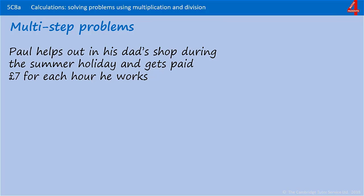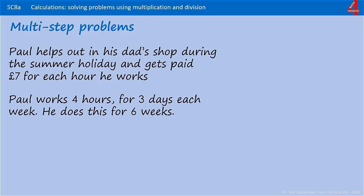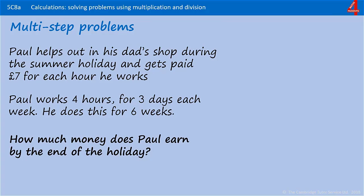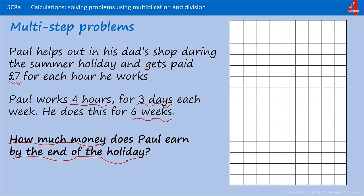Paul helps out in his dad's shop during the summer holiday and gets paid seven pounds for each hour he works. He works four hours for three days each week. He does this for six weeks. How much money does Paul earn by the end of the holiday? So we're being asked to find out how much money he earns. We know that he earns seven pounds for each hour, he works four hours a day for three days each week, and he does that for six weeks.